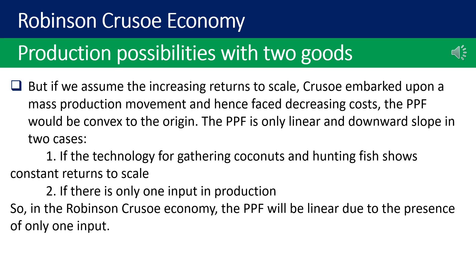If we assume increasing returns to scale, Crusoe embarks upon mass production and faces decreasing costs, so the PPF would be convex to the origin. The PPF is only linear and downward sloping in two cases: one, if the technology for gathering coconuts and hunting fish shows constant returns to scale; two, if there is only one input in production. So in the Robinson Crusoe economy, the PPF will be linear due to the presence of only one input.